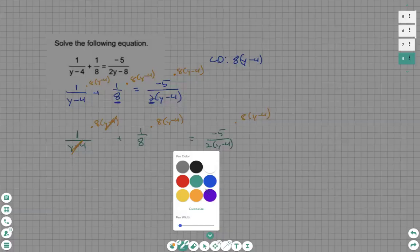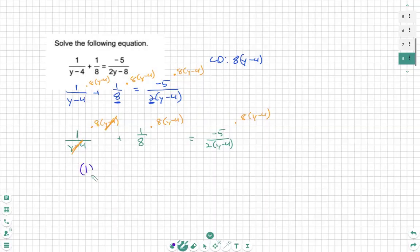Let's use a different color. So 1 would come down from the numerator and the 8 did not cancel, so that also comes down in parentheses. Then we write our plus sign and we see 8 will cancel this time. Our 1 remains and y minus 4 remains in parentheses.